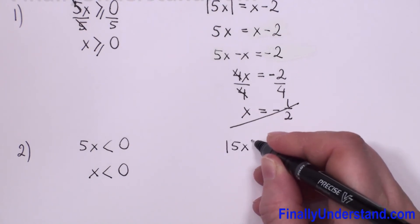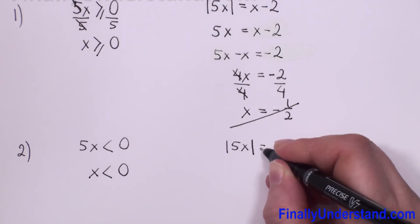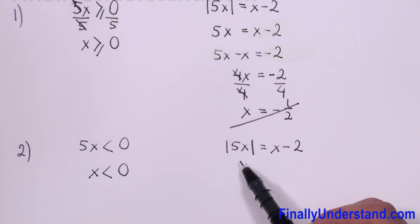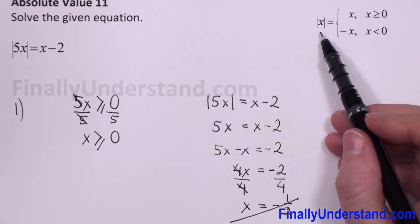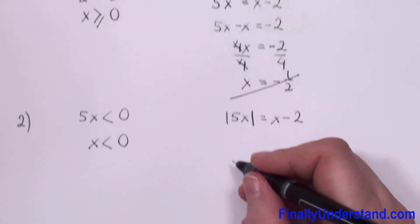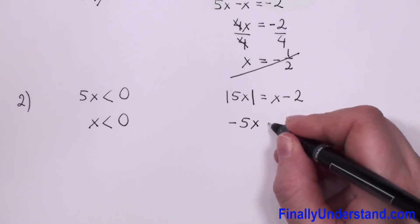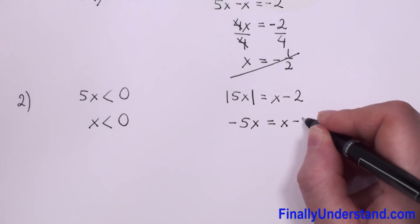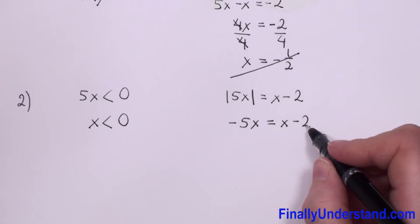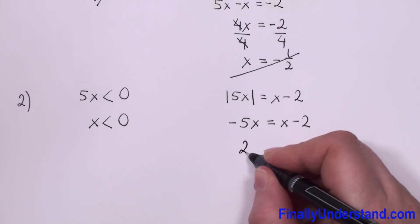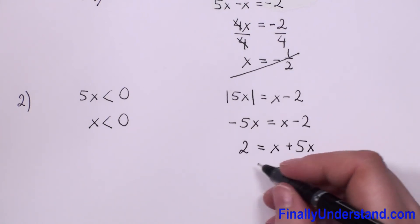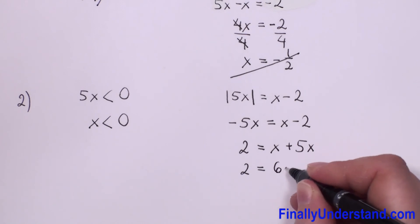So we have to copy our equation. We have the absolute value of 5x equals x minus 2. Now in this case, when we get rid of the absolute value bars, we have to put a negative sign. So we have negative 5x equals x minus 2. I will move negative 5x to the right side and negative 2 to the left. So we have 2 equals x plus 5x, which gives us 2 equals 6x.